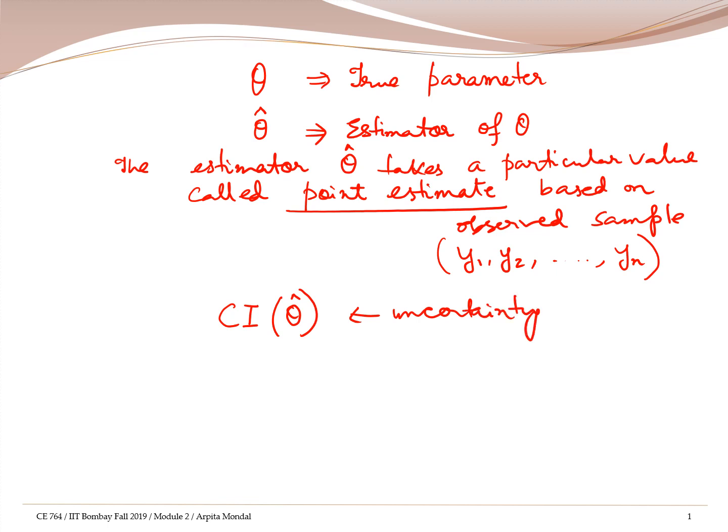Why is theta hat uncertain? Because of sampling variability. If we had repeated sampling, let's say we take the first hundred matches of Sachin, then the second hundred and first matches, or different sets of hundred matches and so on.